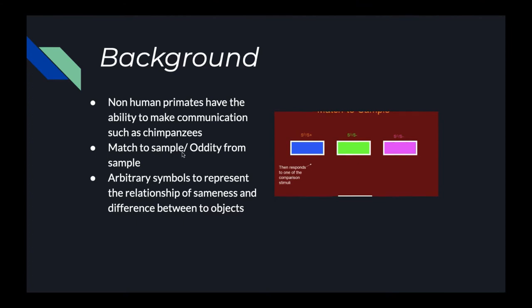So for example, some pigeons were tested and trained on the concept of match to sample and oddity from sample. A pigeon was shown this green box. First, that was the sample. And then he was shown all of these three boxes together. And he was asked, what is same? What is different?